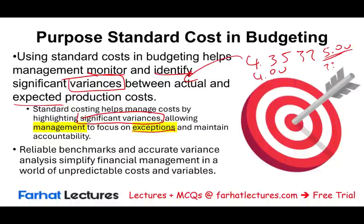You know how much it should cost you. You look at the deviation and you might have to change. Accurate variances also simplify financial management in a world of unpredictable costs and variances — you want to know what's going wrong, and if you fix it, things should be better. Cost changes all the time due to inflation, market conditions, shortages, and supply chain disruptions. You need to know what's happening at all times to look at those moving pieces that go into your cost.